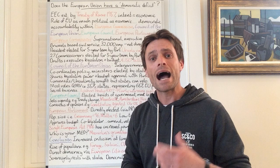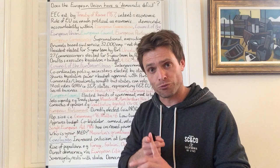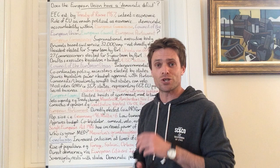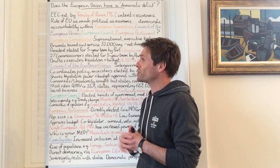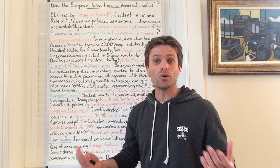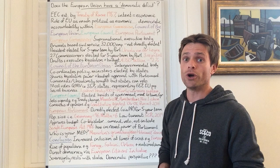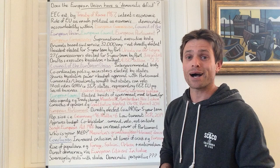The six original signatories were France, Belgium, the Netherlands, Luxembourg, Italy, and West Germany — Germany was divided at the time, so it was West Germany that signed the Treaty of Rome. They wanted to become more economically interdependent and improve their economic outcomes. The side effect, of course, was to avoid another world war on European soil, to which the European Union has been remarkably successful.